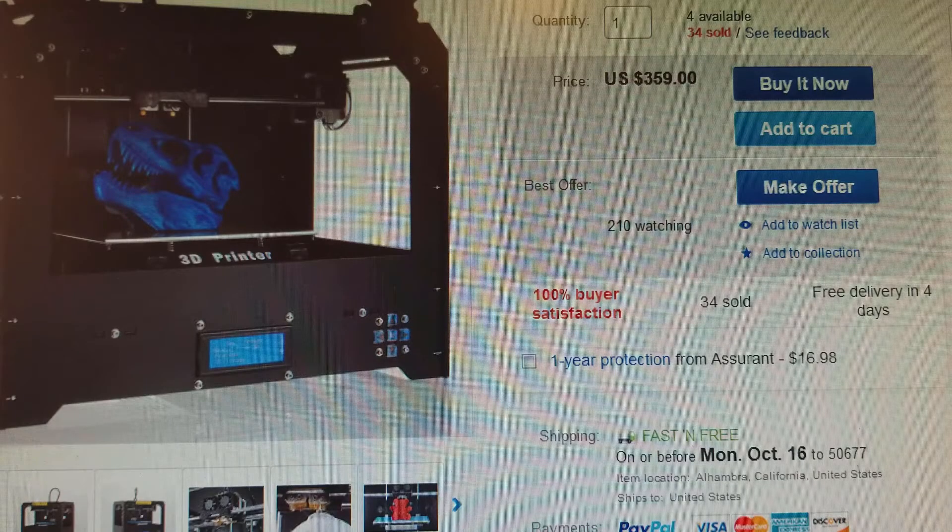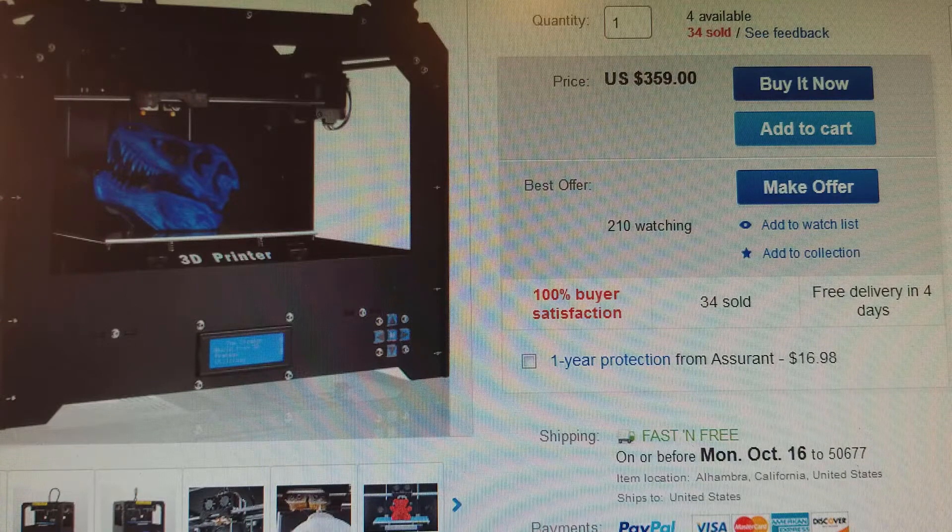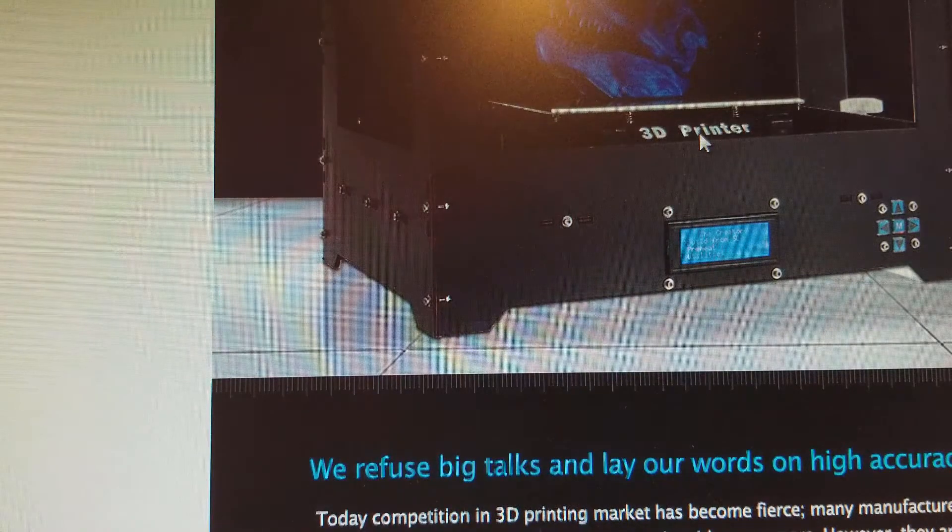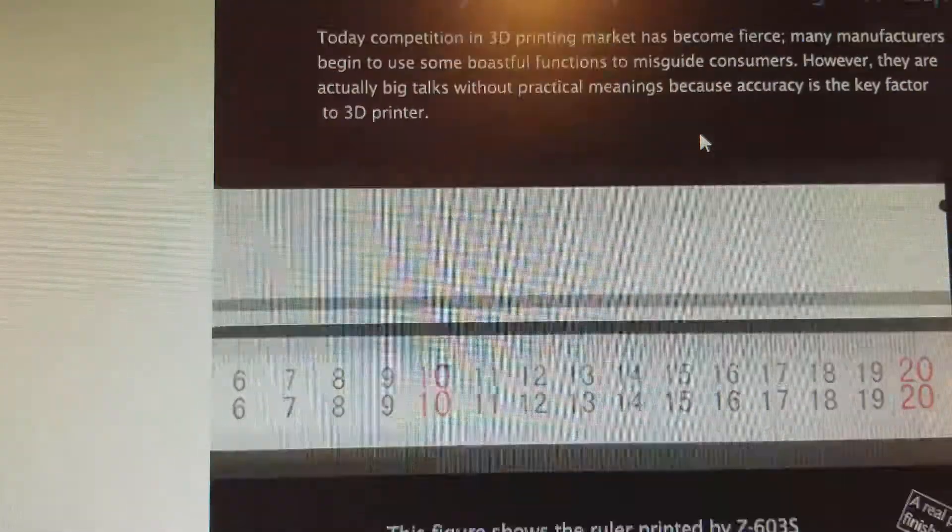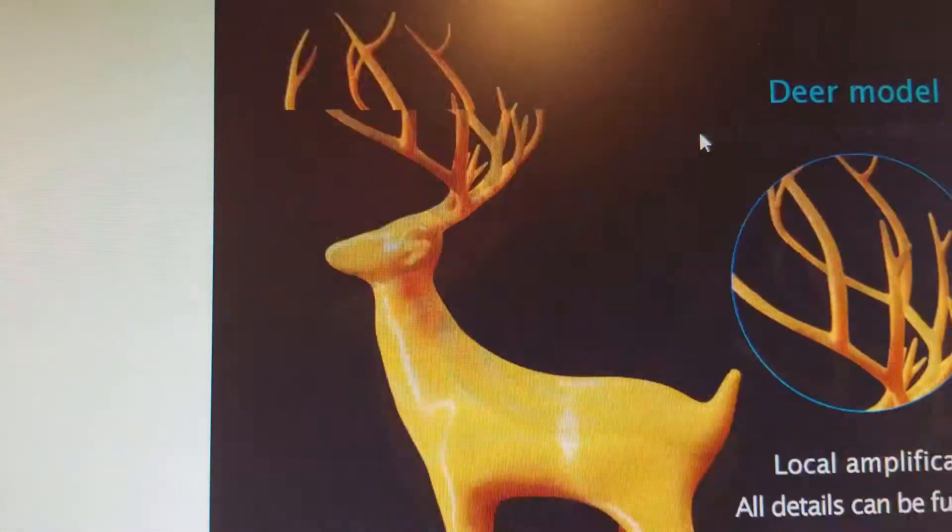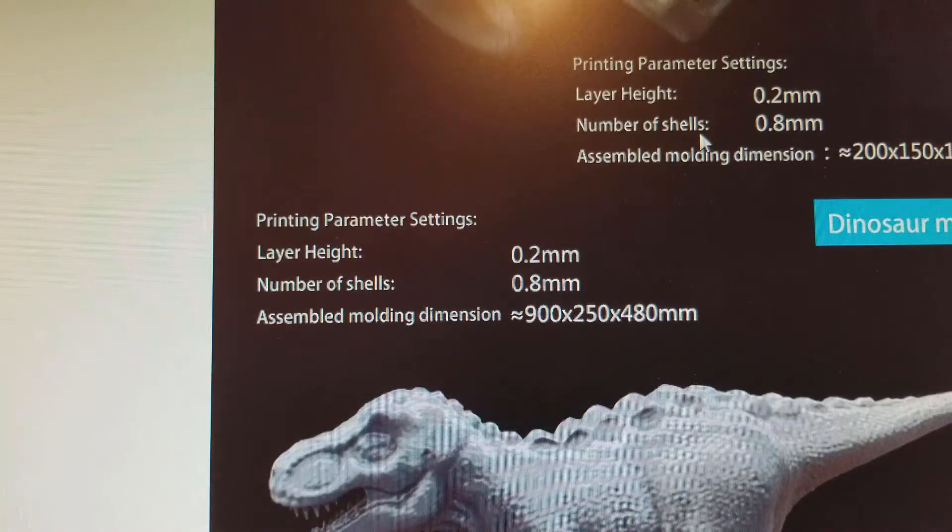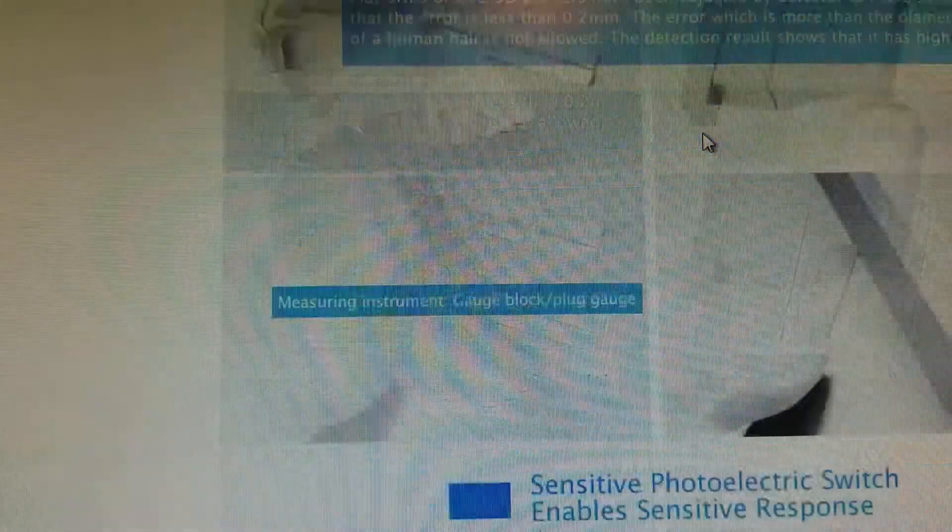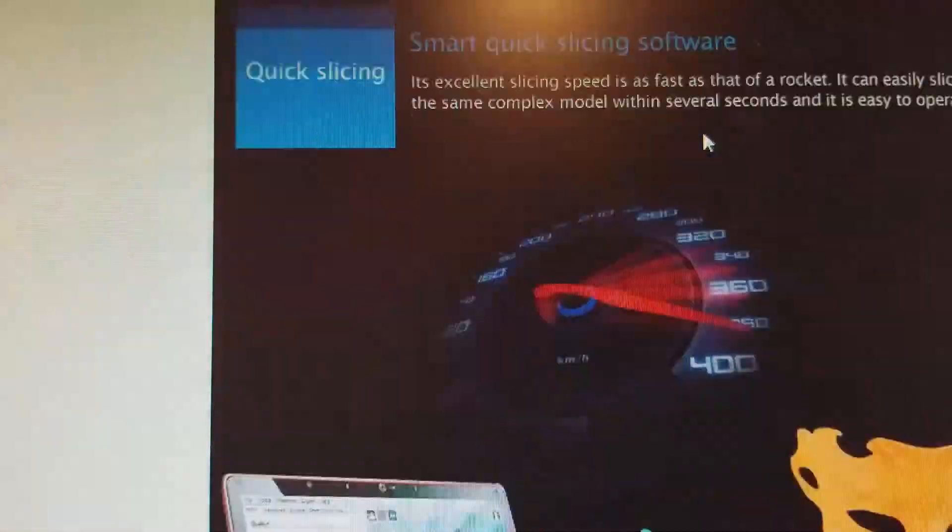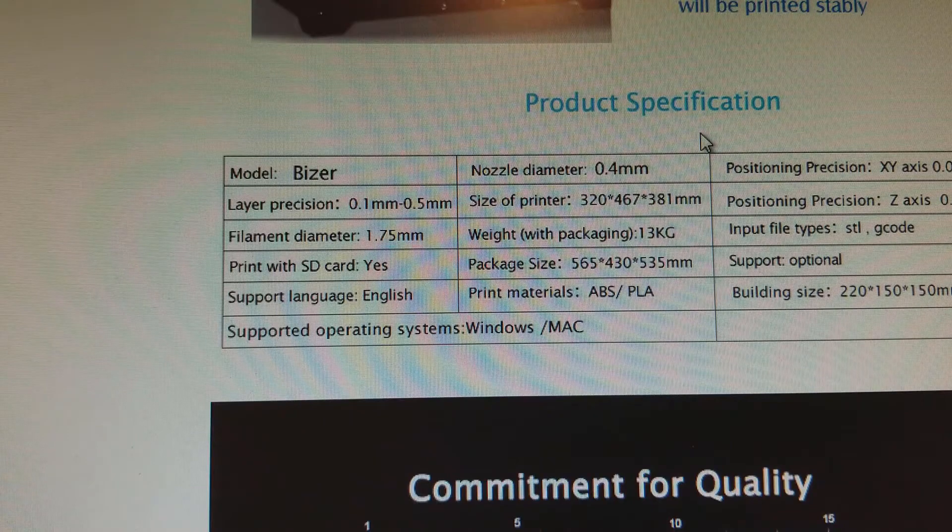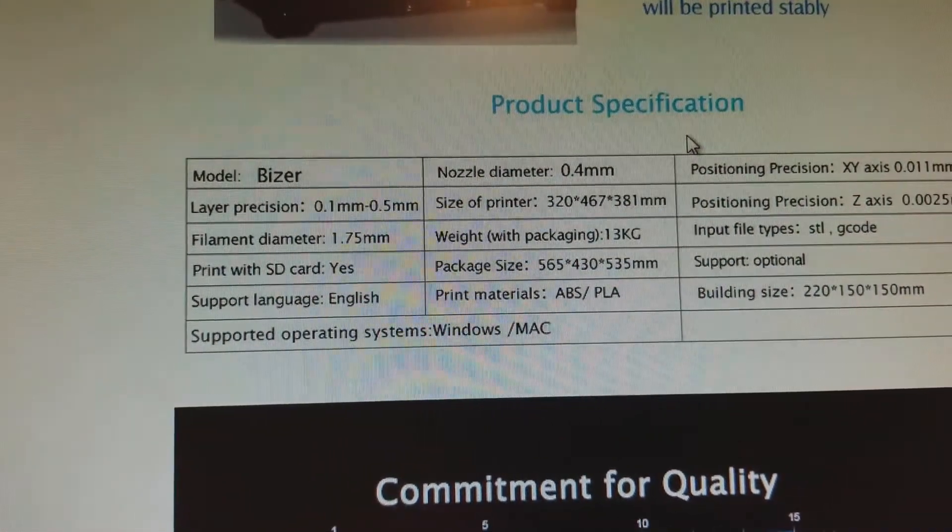So I purchased this printer off of eBay. It is a Bizer or Bizzer if I'm saying that right, and as you can see it costs about 359 dollars with no shipping. Obviously the pictures are pretty impressive. It's a dual extruder so it can print two materials at the same time or two colors at the same time, and it actually looks pretty good here.